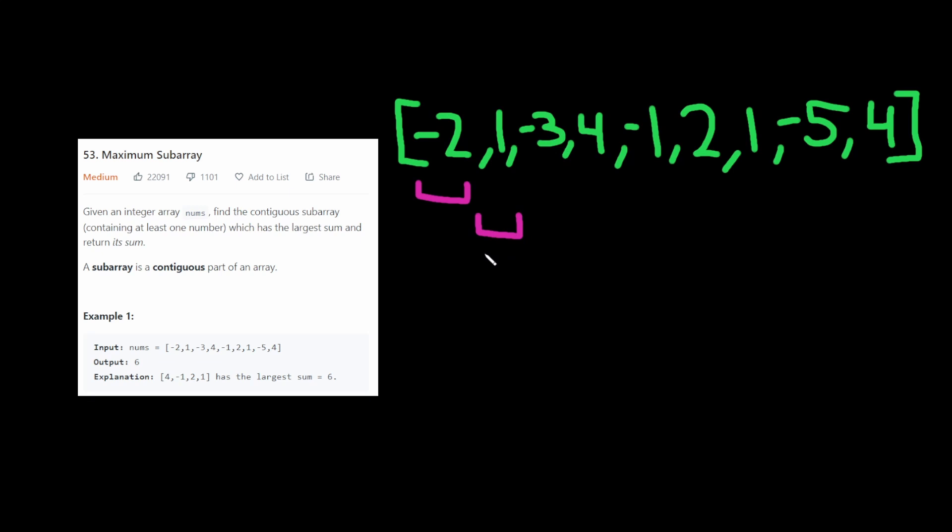Then we get to this negative 3. So we're going to include it in our subarray here. Then we get to this 4 and we see well 4 is actually greater than the sum of 1 and negative 3. So we can just ignore this part of the array.